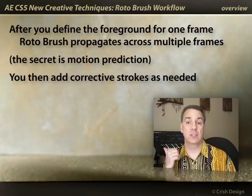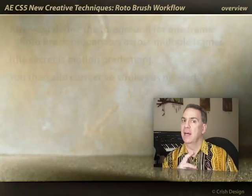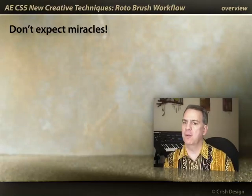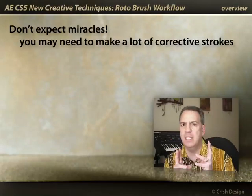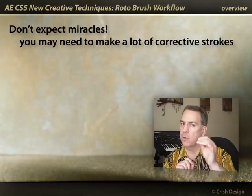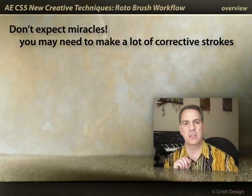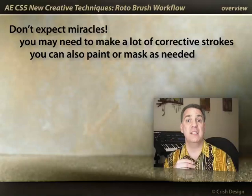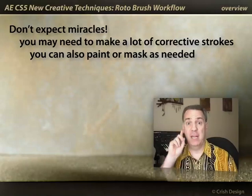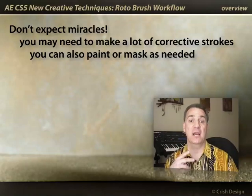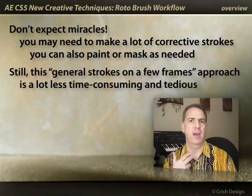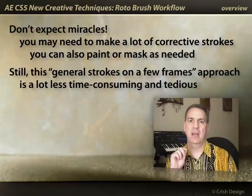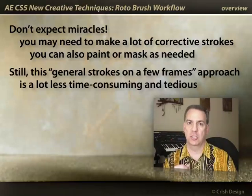It's pretty easy to make corrections in case it makes a mistake. Now Rotobrush is not magic — it's not going to give you a perfect matte the first time. You are going to need to do a little bit of work cleaning up edges and correcting it where it doesn't follow, and you will probably need to clean some stuff up later in post: add paint strokes, add mask shapes. But it's going to be a lot faster than having to hand cut a mask or hand paint an object every single frame of a long shot.